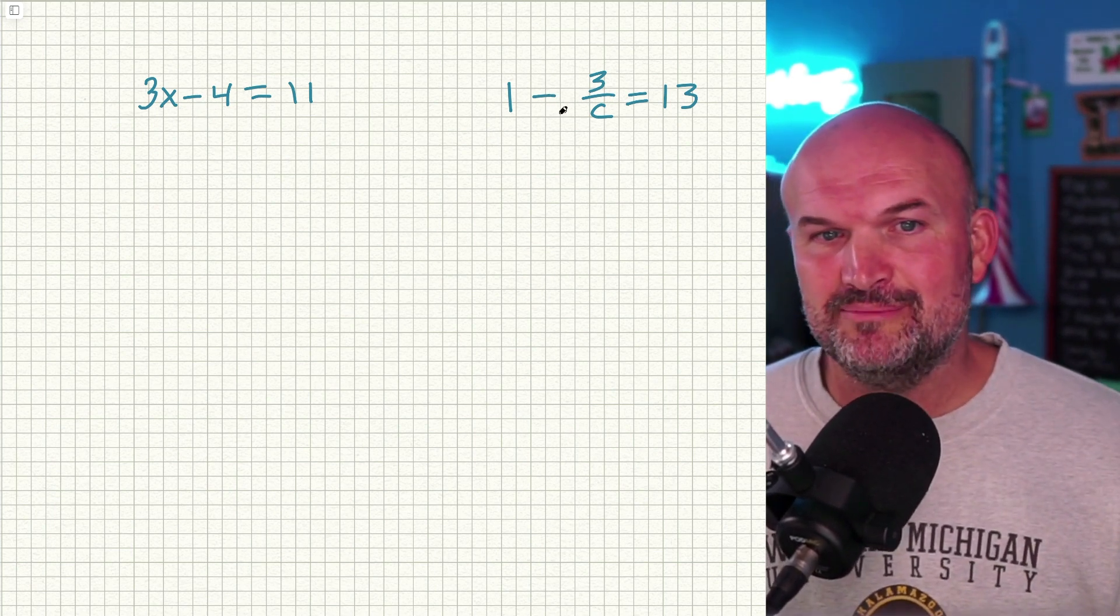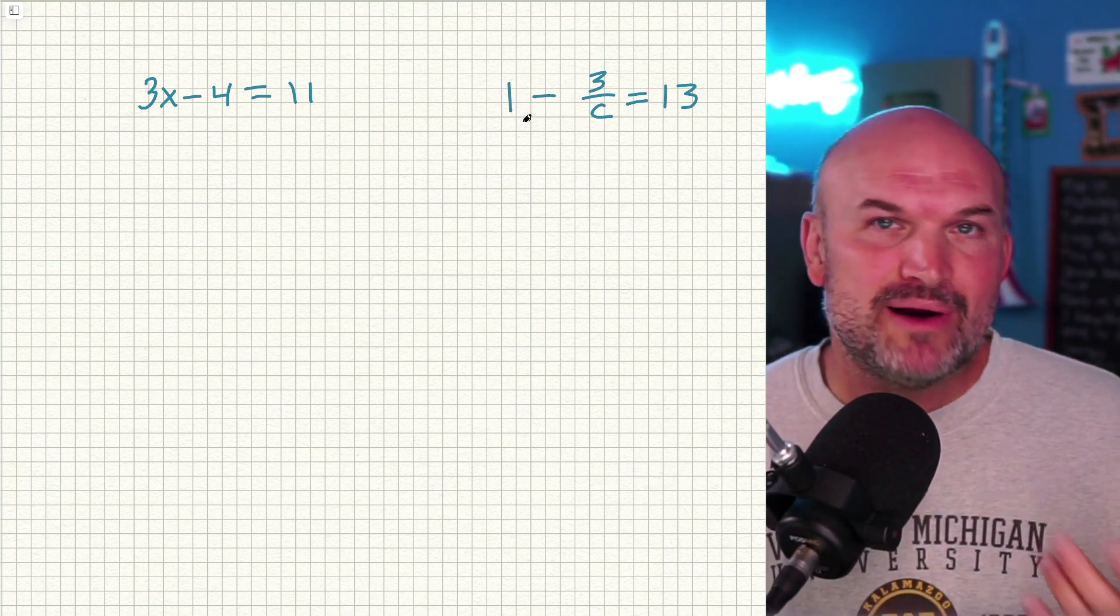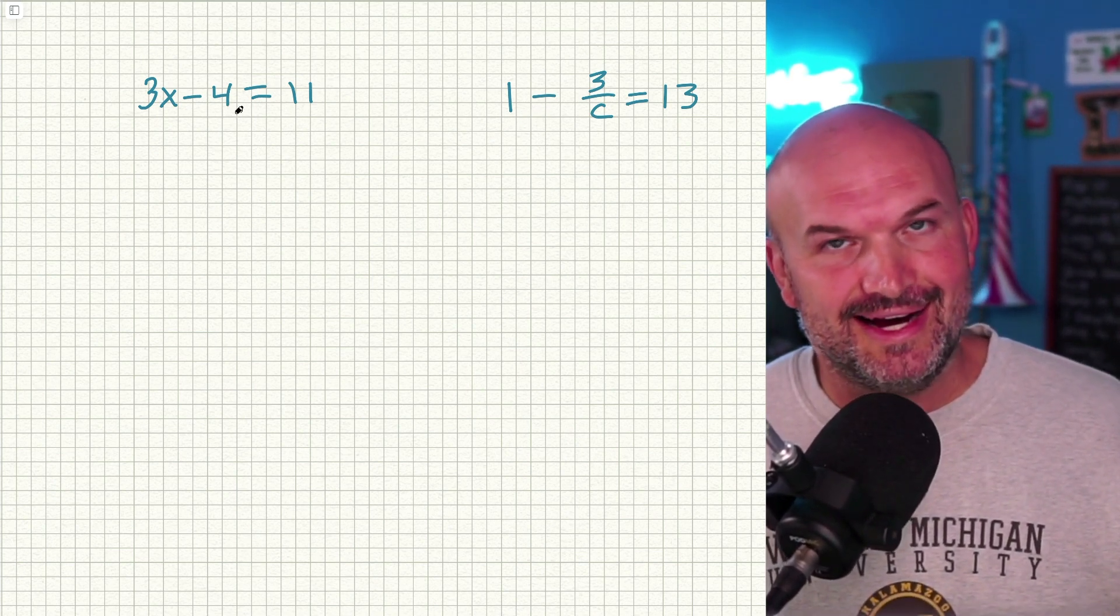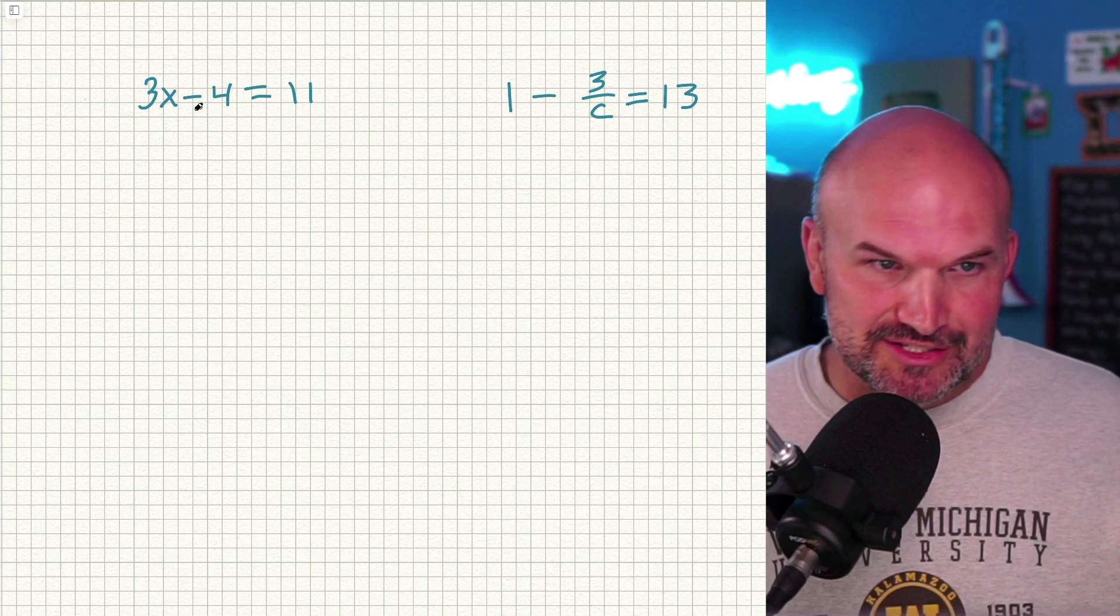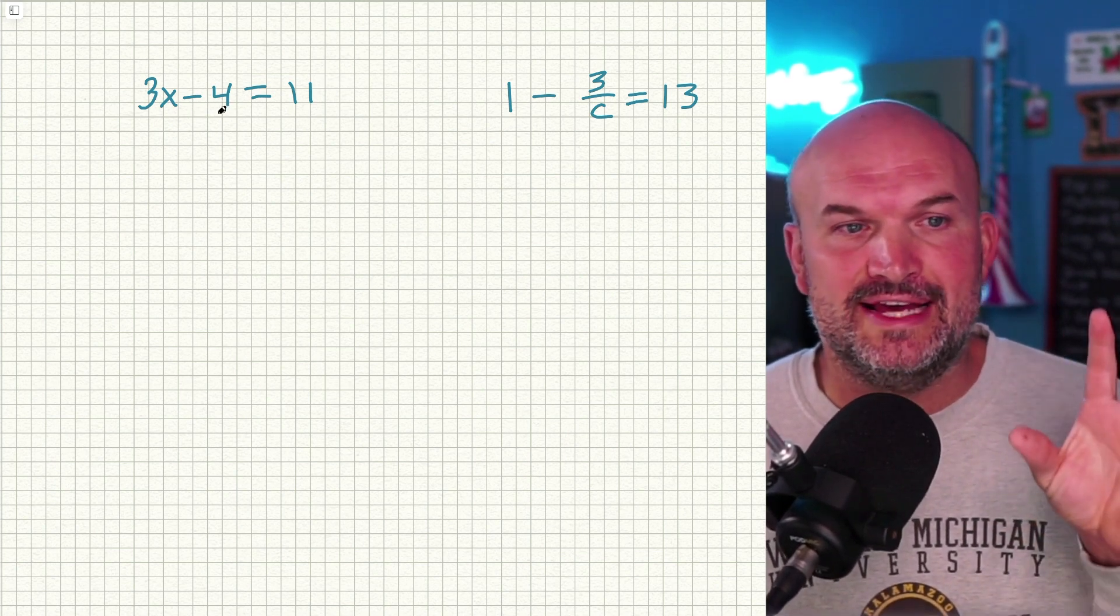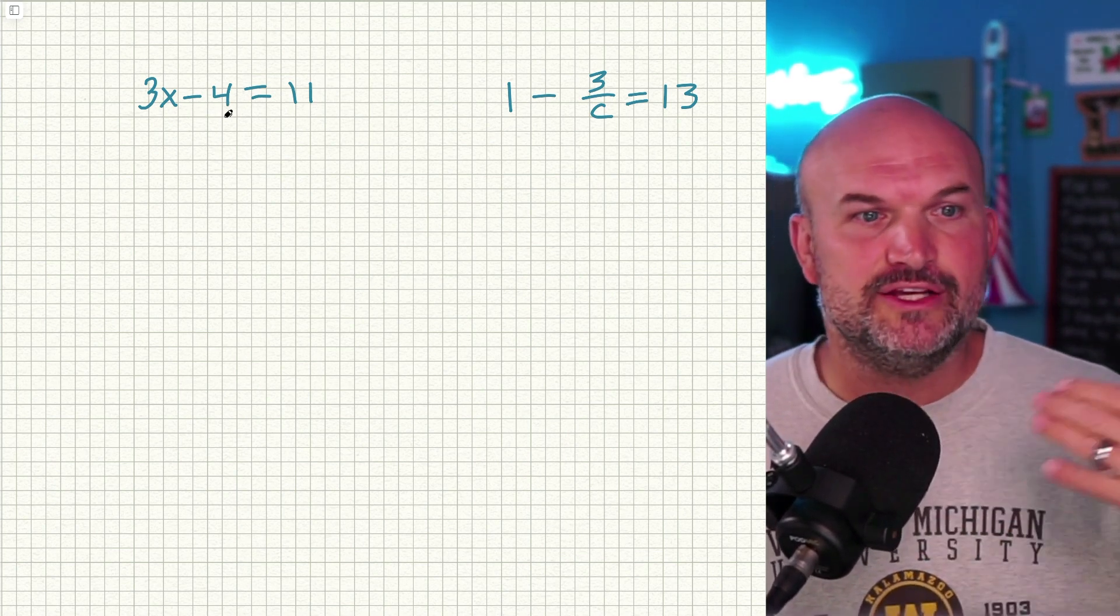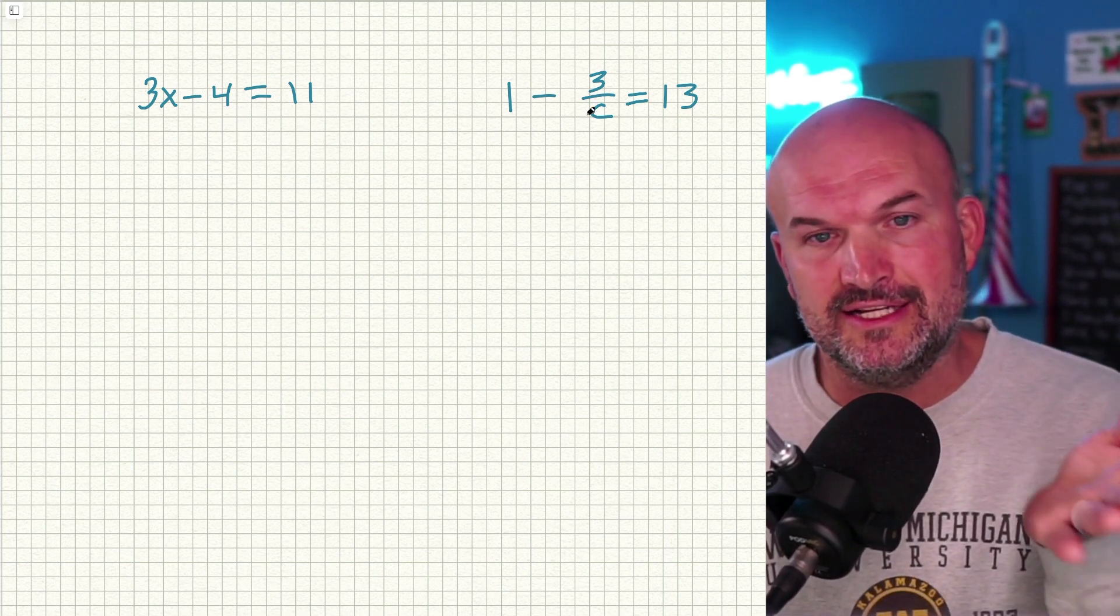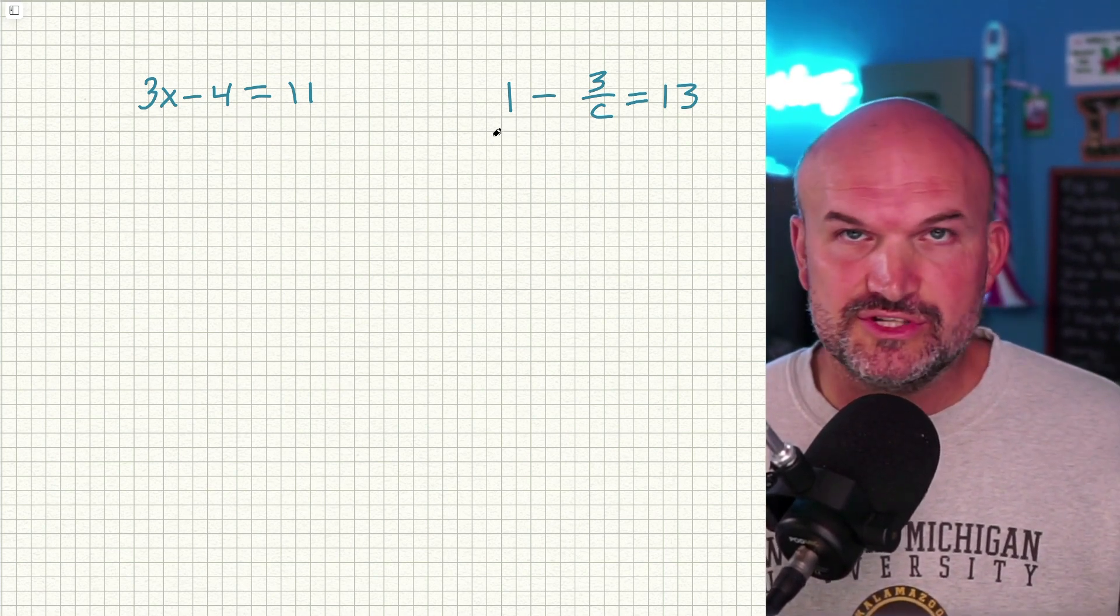But then we get to the hard one because this is the one where students are going to make mistakes and probably the one that your teacher is going to put on the test, even though they only teach you this. So let's go ahead and break down how to solve a two-step equation, the basic way going through the steps so you understand, and then let's apply that understanding to a more difficult problem where students make mistakes.